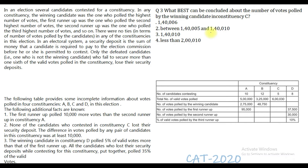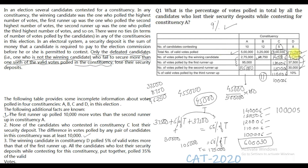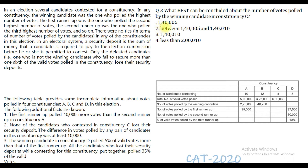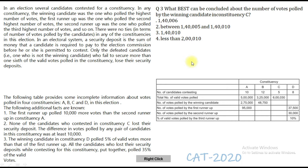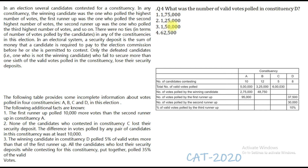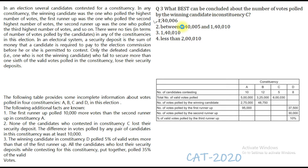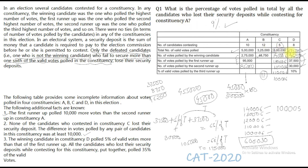Question 3 asks what best can be concluded about the number of votes polled by the winning candidate in constituency C. The winning candidate got 1,40,006 votes, so the correct answer is the first option: 1,40,006. Question 4 asks for the number of valid votes in constituency D. We already calculated it — it was 1,75,000, so the answer is the first option.